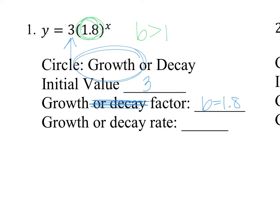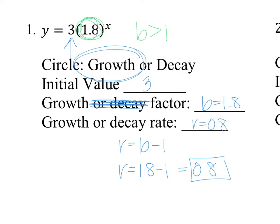My growth rate equals b minus 1 because it's growth. So my rate equals 1.8 minus 1, which equals 0.8. That is my growth rate, so r equals 0.8.